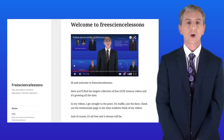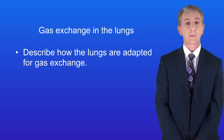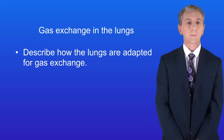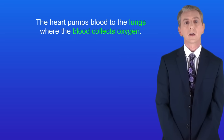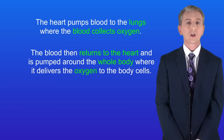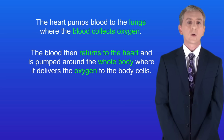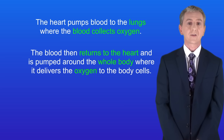Hi and welcome back to freesciencelessons.co.uk. By the end of this video you should be able to describe how the lungs are adapted for gas exchange. In the last few videos we've been looking at the circulatory system. We saw that the heart pumps blood to the lungs where the blood collects oxygen. The blood then returns to the heart and is pumped around the whole body, where it delivers the oxygen to the body cells. So in this video we're looking at how the lungs are adapted for gas exchange.